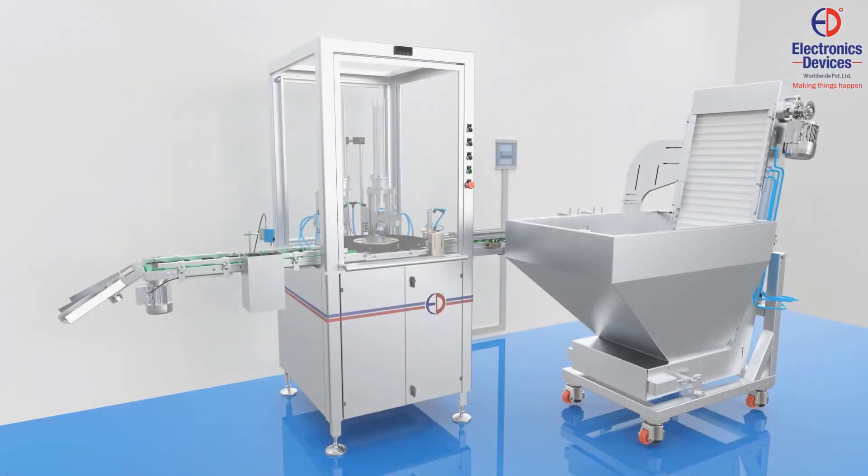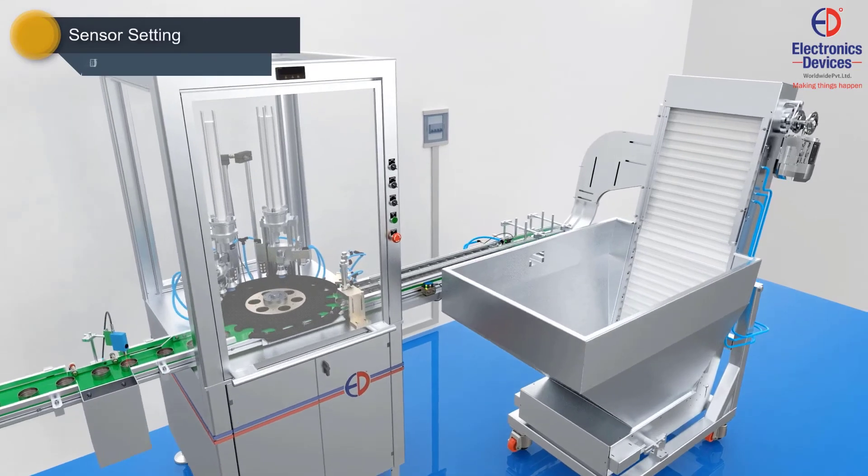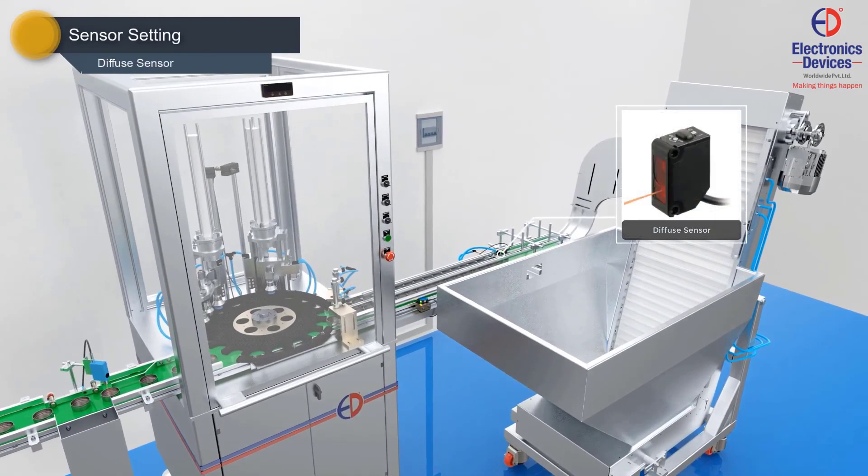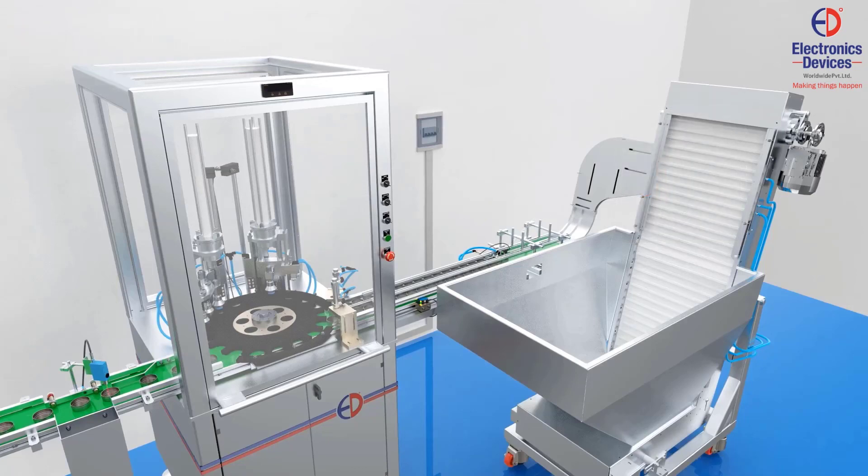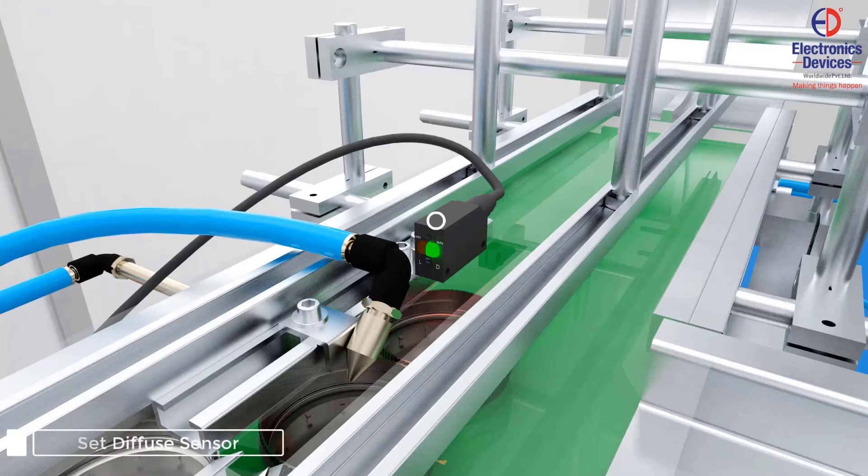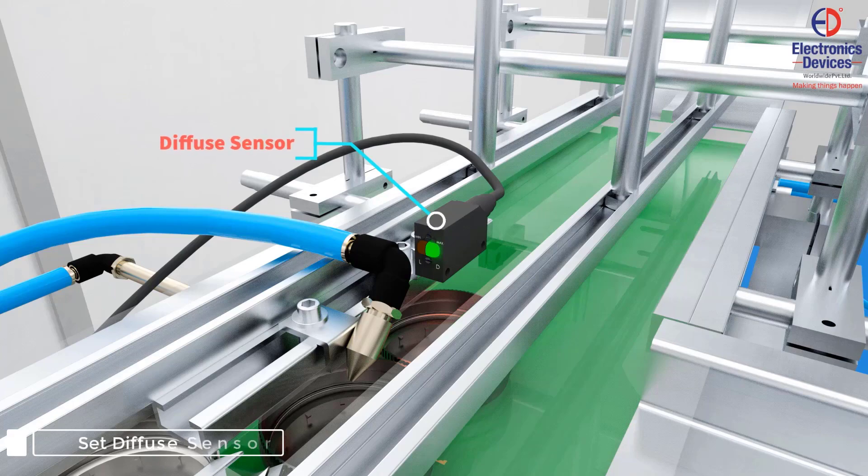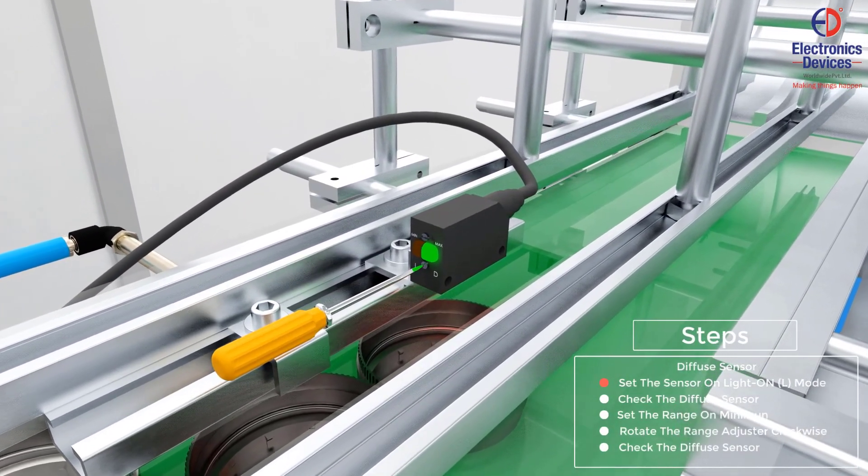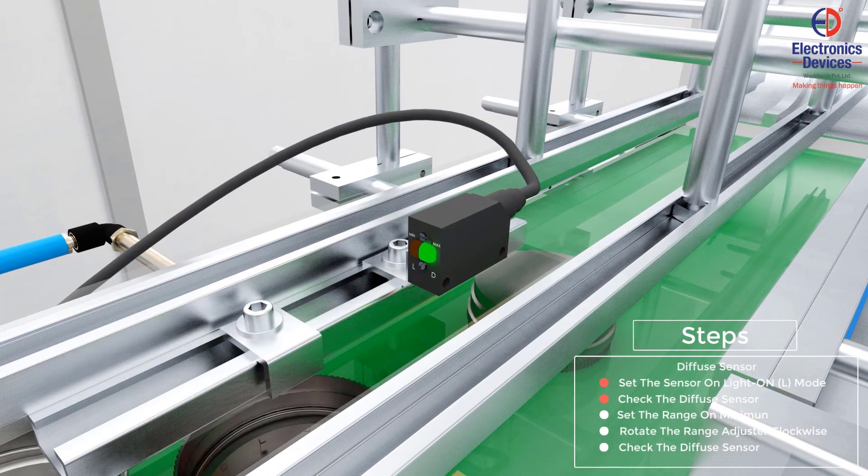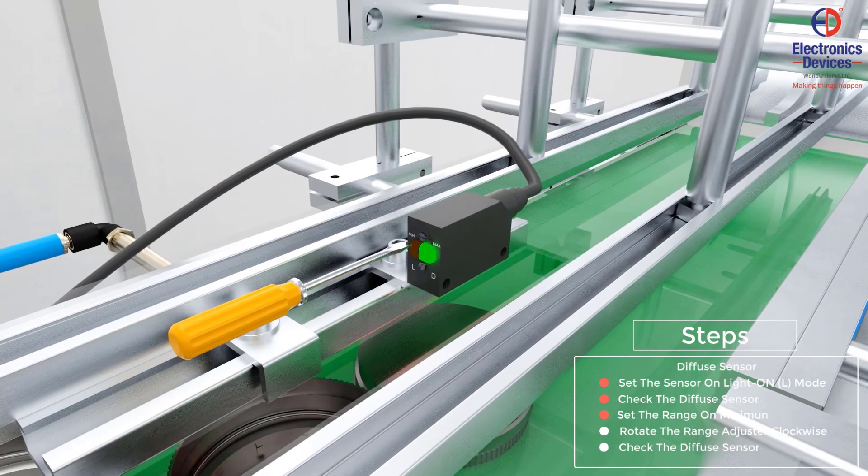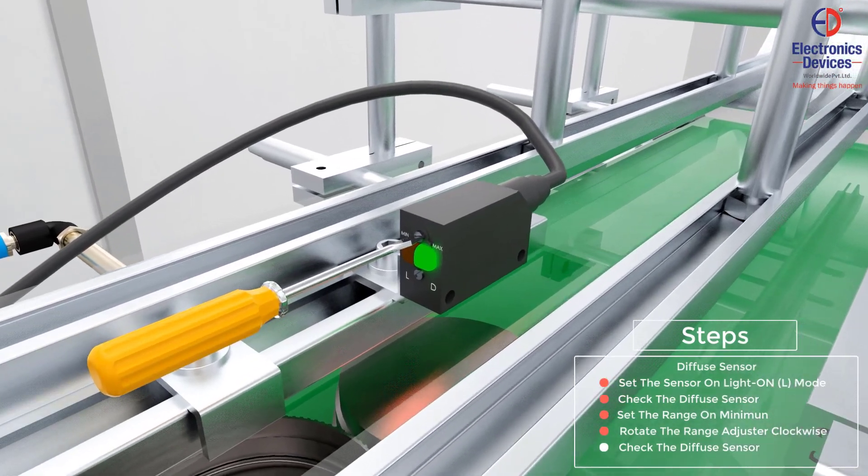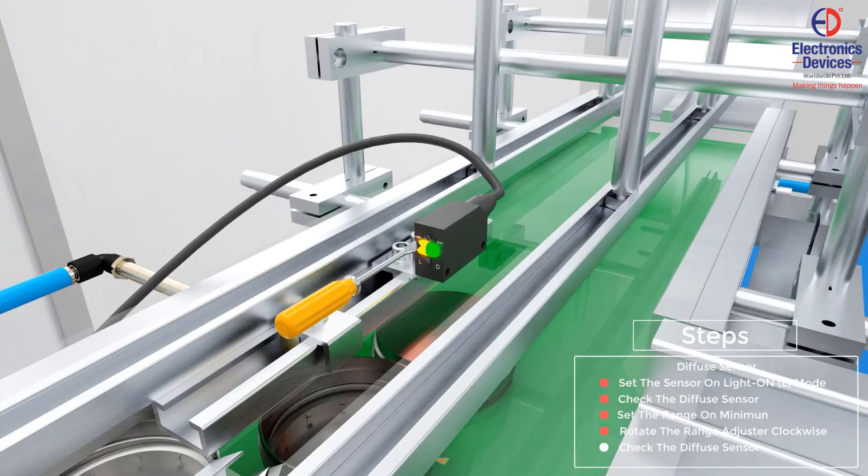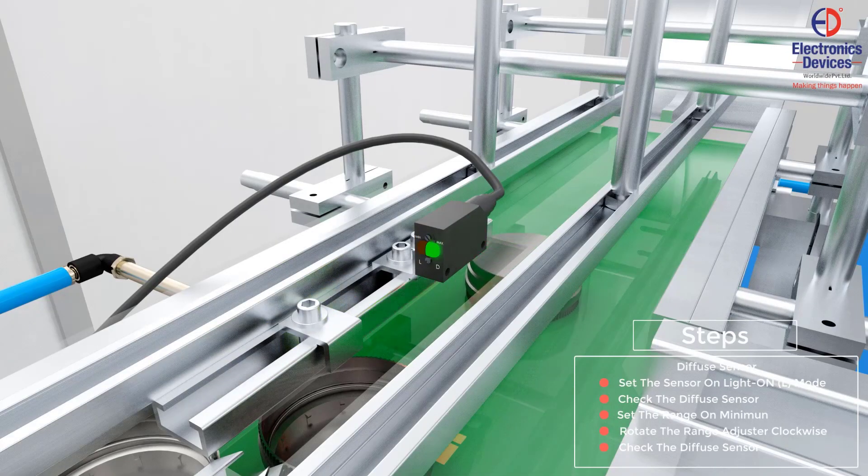Now, let's understand the sensor settings of the machine. When starting the sensor settings, set the sensor on L mode. Check the diffuse sensor, set the range on minimum, and rotate the range adjuster clockwise. Recheck the diffuse sensor.